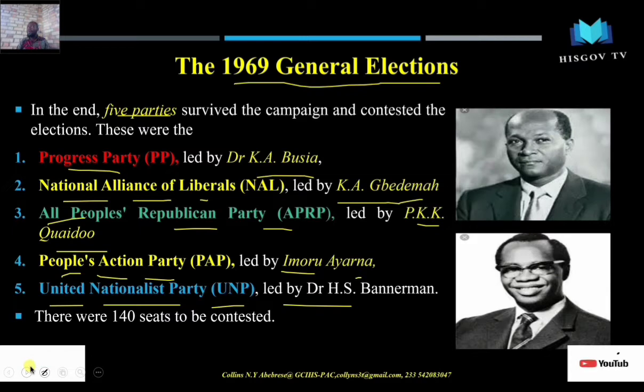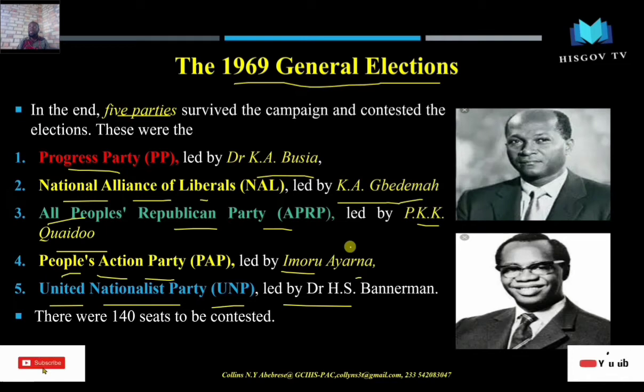Because the CPP was not allowed to be formed again, two of its members contested on their own. Gbedemah formed the National Alliance of Liberals and Quaidoo formed the All People's Republican Party — they came from the same CPP background but did not come together as a unified force.